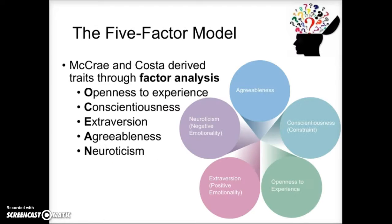They then looked at what those items had to do with and gave them names or labels that made sense based on what the questions were asking about. What they came up with were five factors. You can use the OCEAN acronym to help you remember these: Openness to experience, Conscientiousness, Extroversion, Agreeableness, and Neuroticism.